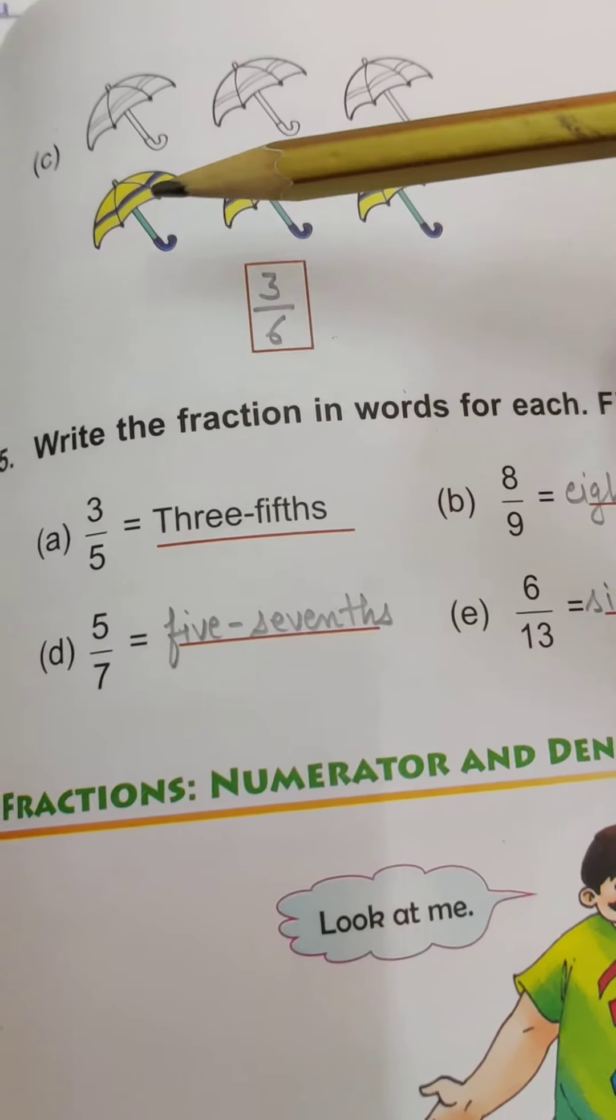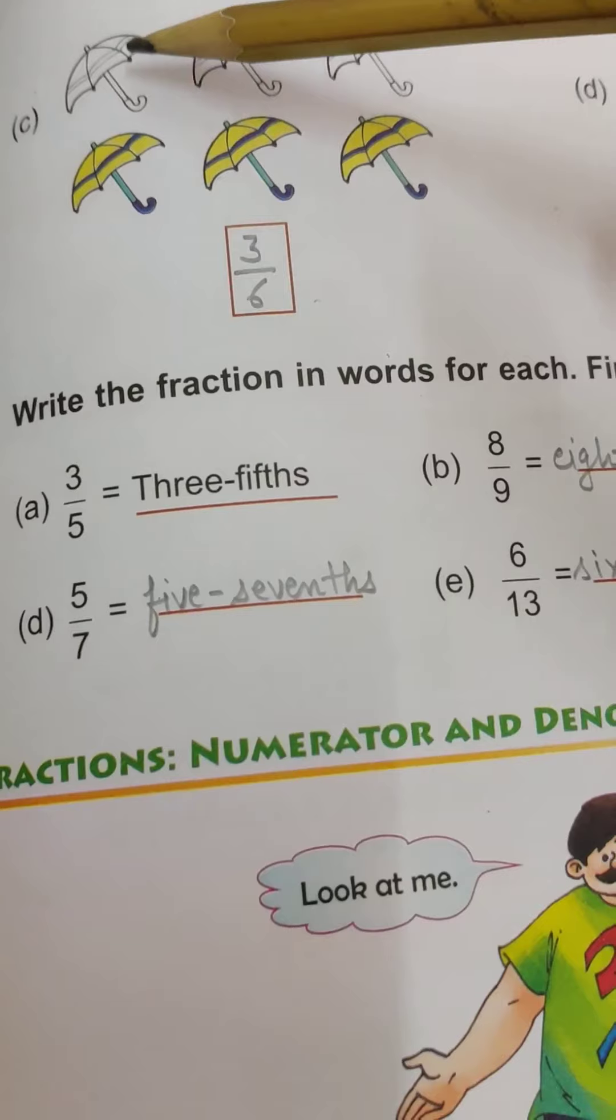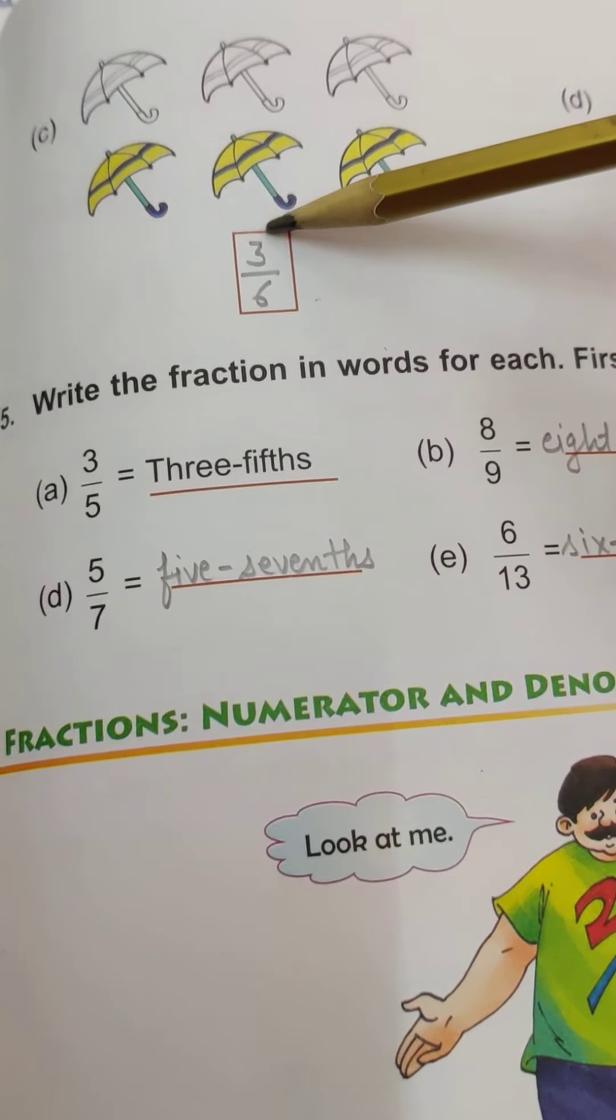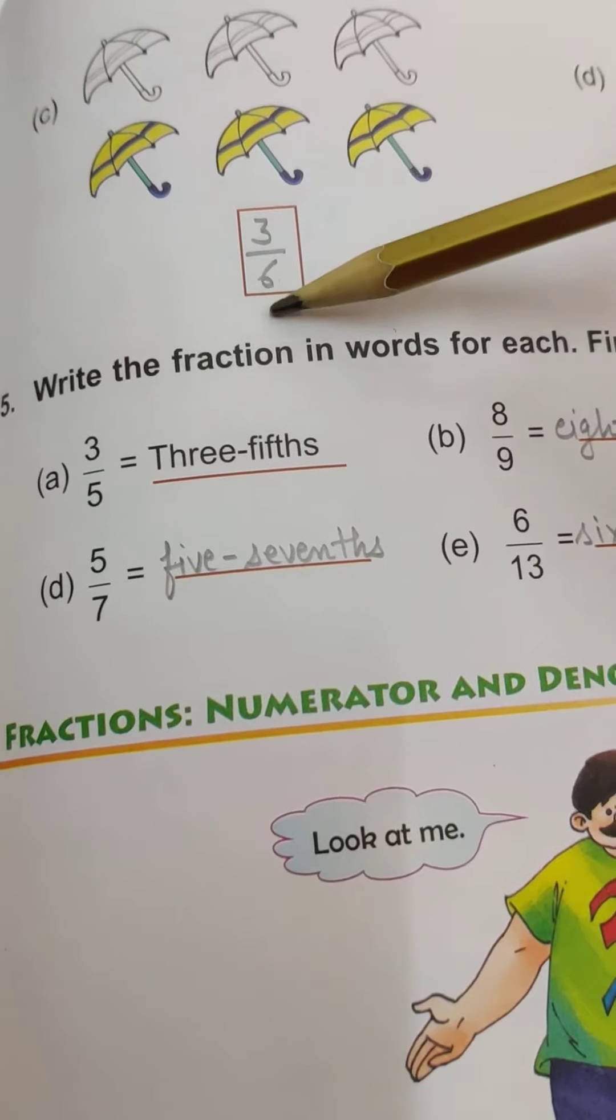Next, see, shaded figures is 1, 2, 3, and total figures: 1, 2, 3, 4, 5, 6. Means 3 figures are shaded out of 6, so it means 3 by 6.